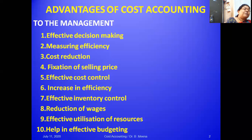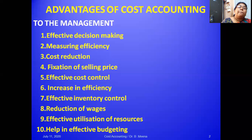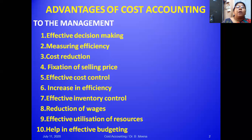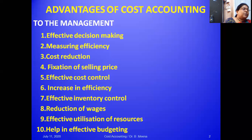Cost accounting also helps in effective utilization of resources. Marginal costing is especially helpful in make-or-buy decisions. For example, a TV manufacturing company can either buy assembling parts from outside or produce them in-house. By comparing contribution per unit for each option, they determine the better choice. Similarly, cost accounting supports profit planning, export decisions, sales mix decisions, and standard costing and budgetary control.